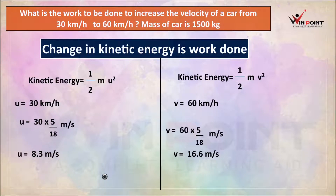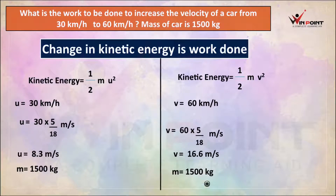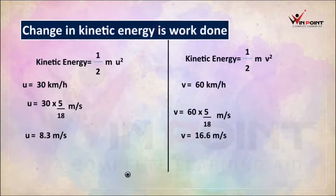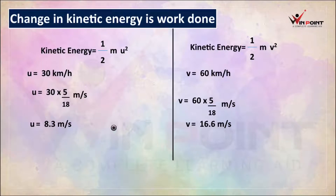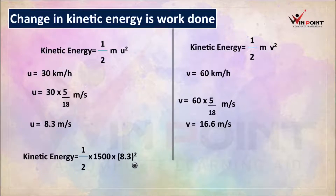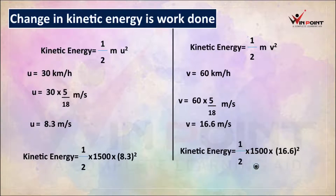Now we can find kinetic energy. The mass here is 1500 kg. We substitute all the values — mass and velocity — into the equation. Initial kinetic energy equals half into 1500 into 8.3 squared. Final kinetic energy equals half into 1500 into 16.6 squared.